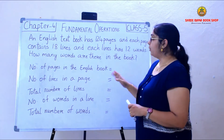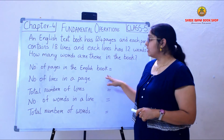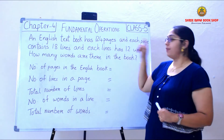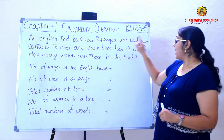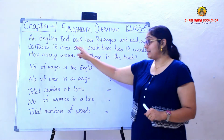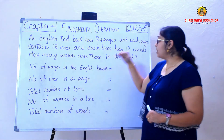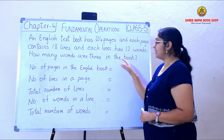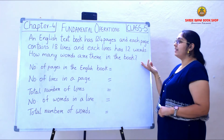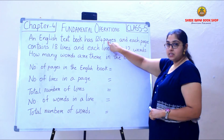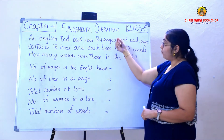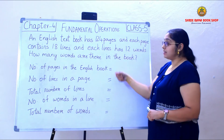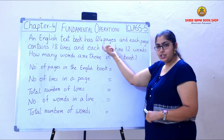Now children, we will be doing word problems. The first example: an English textbook has 124 pages, each page contains 18 lines, and each line has 12 words. How many words are there in the book? So what did they give us? They gave the number of pages, the number of lines in each page, and the number of words in each line.